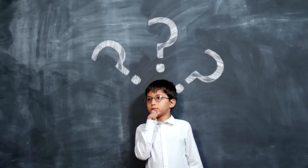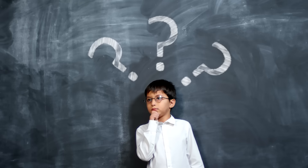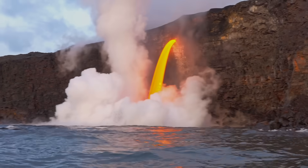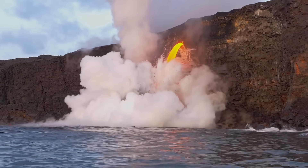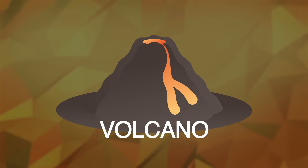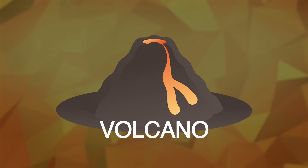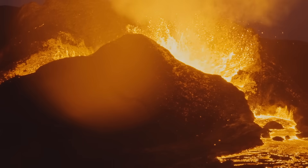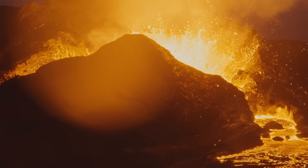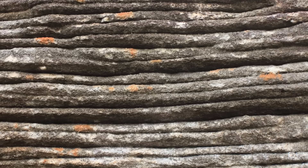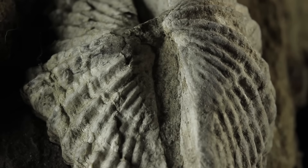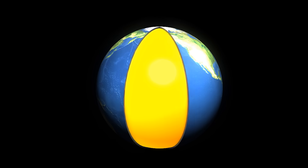Can you guess what the last material is? I'll give you a hint — it ejects from giant openings in the Earth's surface. If you said volcanoes, you're right! Volcanoes erupt melted rocks that slowly create all kinds of landforms, just like sediment, dirt, fossils, and the Earth's crust.